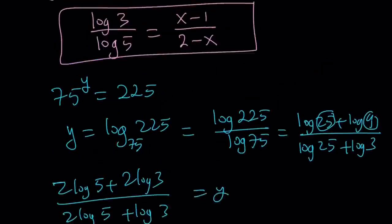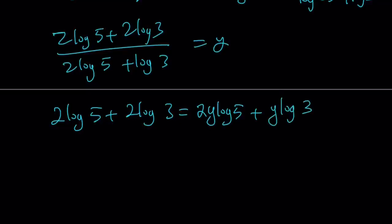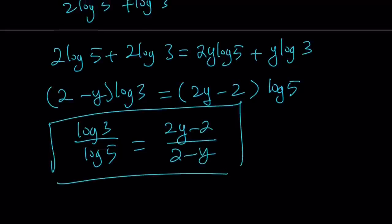And we're going to do the same thing. So we're going to get log 3 over log 5 from here. And we're going to set them equal to each other. 2y log 5 plus y log 3. Since I'm trying to get the log 3 on the left hand side, let's subtract y log 3. 2 minus y log 3 is what I have. And on the other side I have 2y minus 2. Notice that the same coefficients are appearing because it's the same problem.